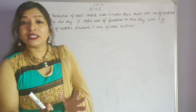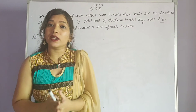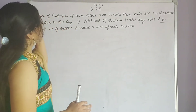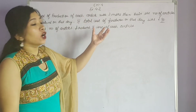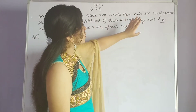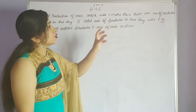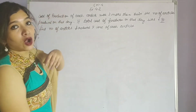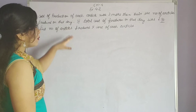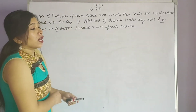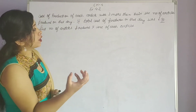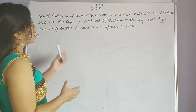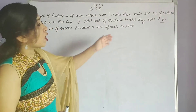The question says: a cottage industry produces a certain number of articles on a particular day. The condition given is that the cost of production of each article is three more than twice the number of articles produced that day. The total cost of production that day is 90 rupees. We have to find the number of articles and the cost of each article.